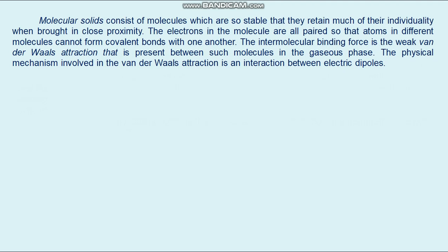Many organic compounds, inert gases, and ordinary gases such as oxygen, nitrogen, and hydrogen form molecular solids. Because the binding is weak, solidification takes place only at very low temperatures — the melting point of solid hydrogen is 14 kelvin. The weak binding makes molecular solids easy to deform and compress, and the absence of free electrons makes them very poor conductors of heat or electricity.